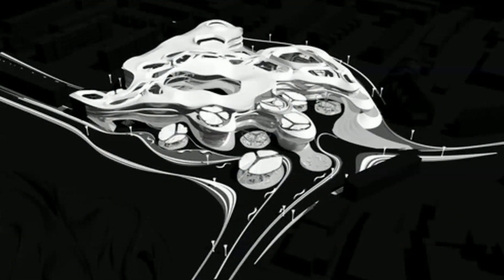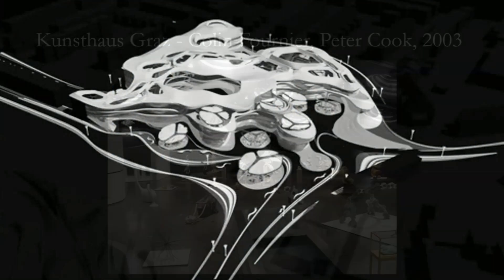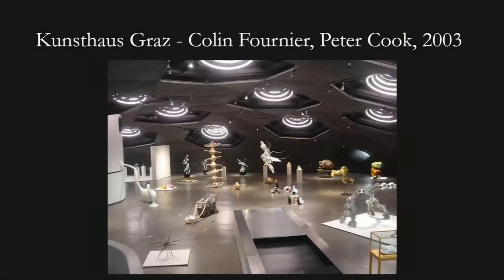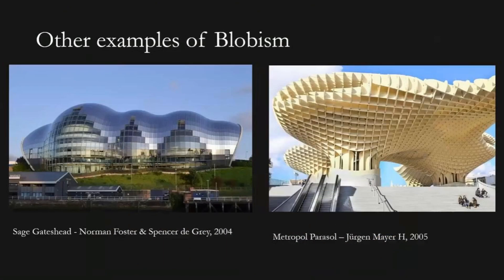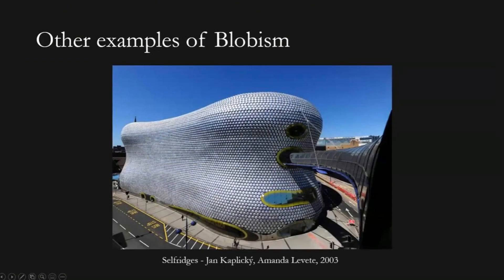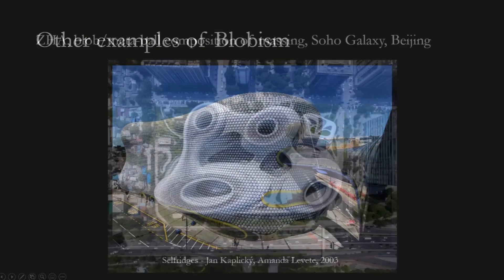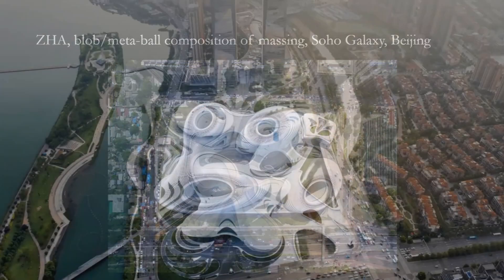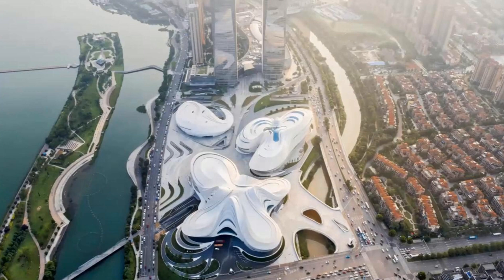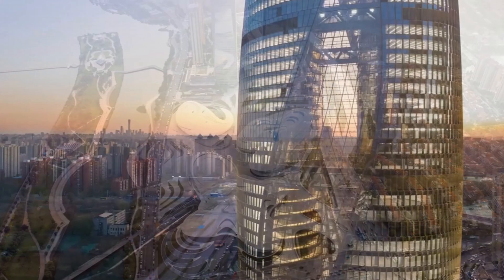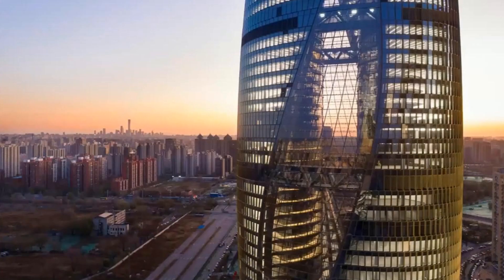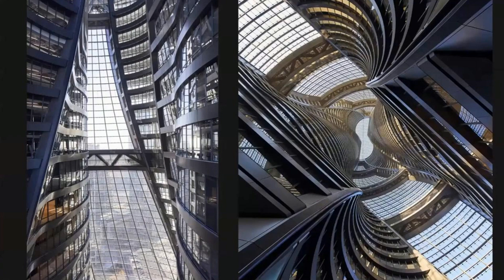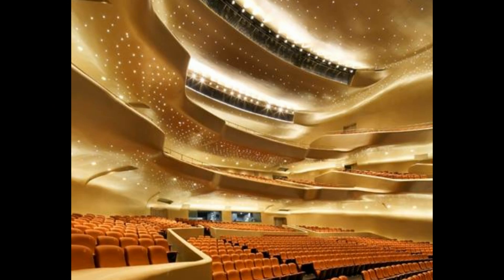Parametric architecture is more than just a design approach — it represents a fusion of art, science, and technology. It enables architects to create structures that respond intelligently to their context, users, and environmental conditions. This evolution in architectural thinking has led to the development of buildings that are not only visually striking but also functionally optimized and sustainable.